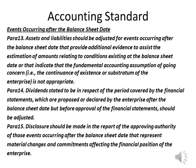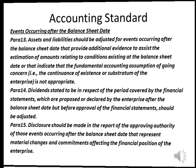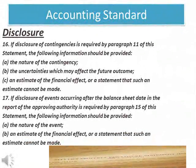Paras 14: Dividends stated to be in respect of the period covered by the financial statements which are proposed or declared by the enterprise after the balance sheet date but before approval of the financial statements should be adjusted. Paras 15: Disclosure should be made in the report of the approving authority of those events occurring after the balance sheet date that represent material changes and commitments affecting the financial position of the enterprise. Paras 16: If disclosure of contingencies is required by paragraph 11 of this statement, the following information should be provided: (a) the nature of the contingency, (b) the uncertainties which may affect the future outcome, (c) an estimate of the financial effect or a statement that such an estimate cannot be made.